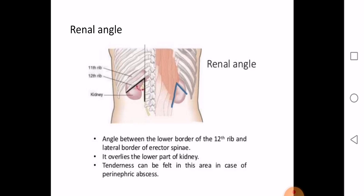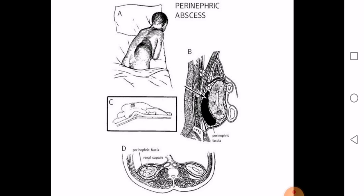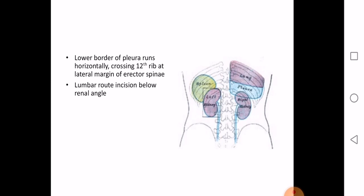In retrograde pyelography, the contrast material is introduced in reverse — via the ureteric orifice. A cystoscope is passed through the urethra to the bladder, and a catheter is passed through the cystoscope into the ureteric orifice in the urinary bladder to inject the dye upward to the kidney. Other methods include USG, CT, and MRI.